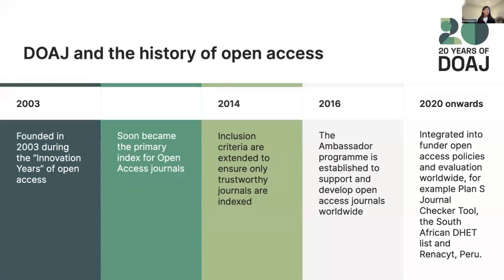Briefly on our history: the DOAJ was founded in Sweden in 2003 by a university librarian who came up with the idea of listing journals that don't charge fees to readers. It soon became the primary index of open access journals. Today we have more than 20,000 journals listed. As it grew fast, in 2014 we revised our criteria to set quality standards for editorial practices — such as having a clearly described peer review process — to provide users with trustworthy publications.